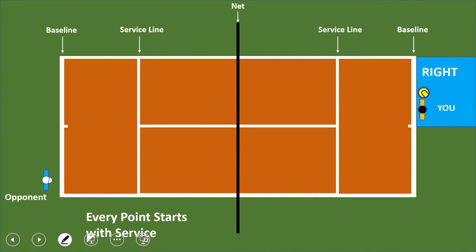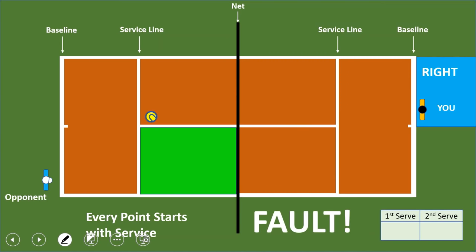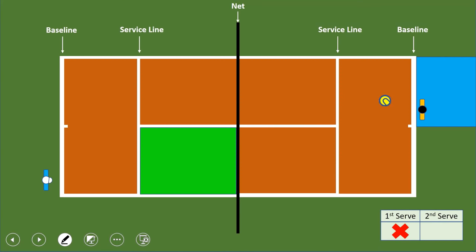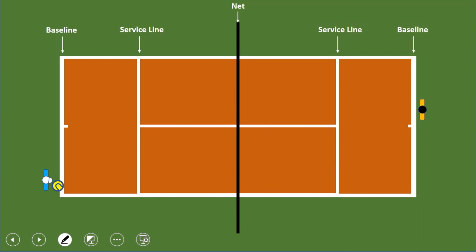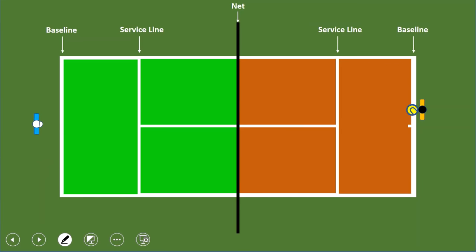When you serve, you toss the ball from the blue area and hit it. The ball's first bounce must land in the green service area for a good serve. Tennis gives you two serves: if your first serve is a fault (bounces outside the green area), you get a second serve. If the second serve is good, it's your opponent's turn to return the ball so it bounces in the green area, and then the rally continues.